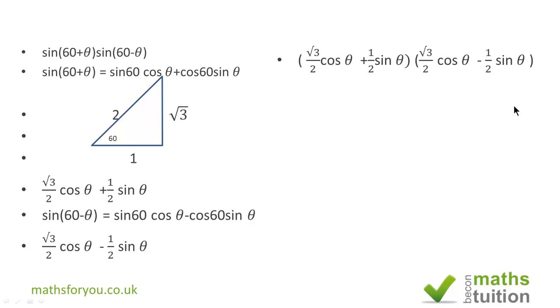And when we combine both, we have something similar to the difference of two squares. So that now becomes (√3/2 cos θ)² - (1/2 sin θ)². Similar to (A+B)(A-B) = A² - B².